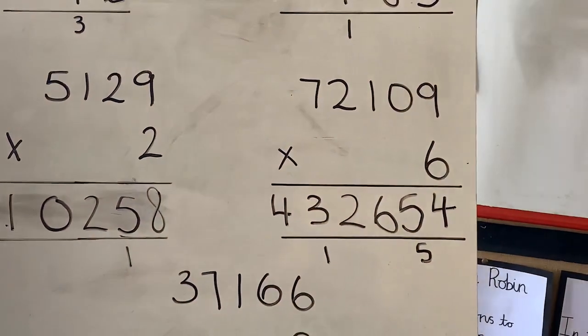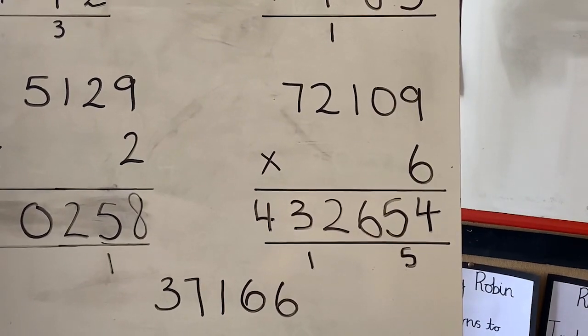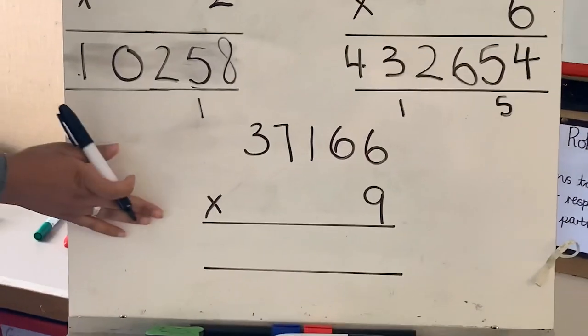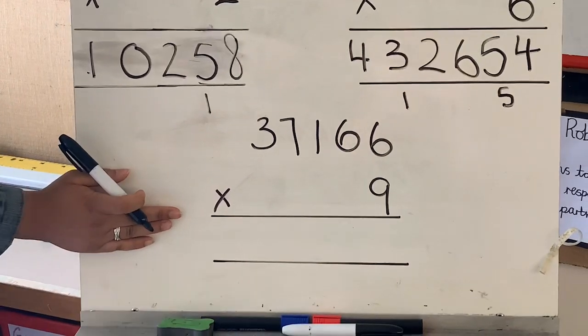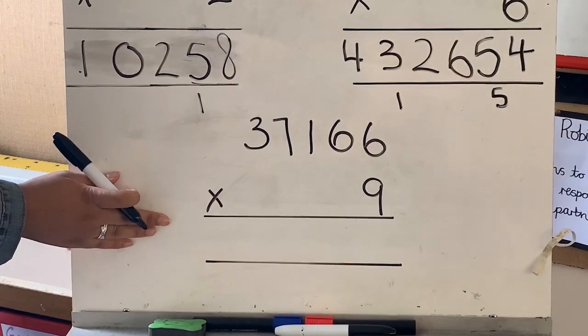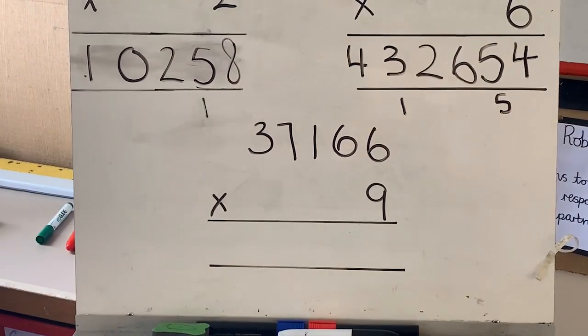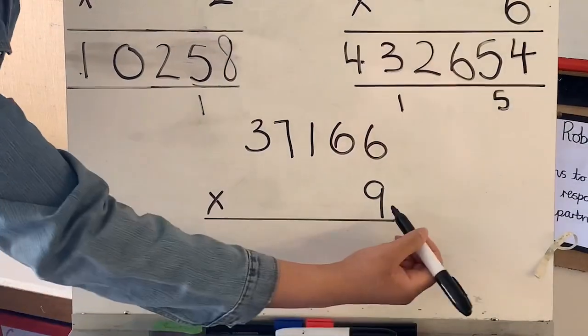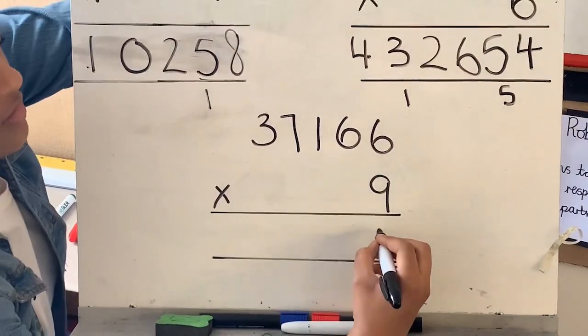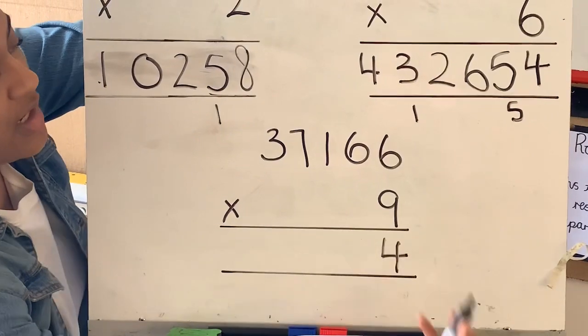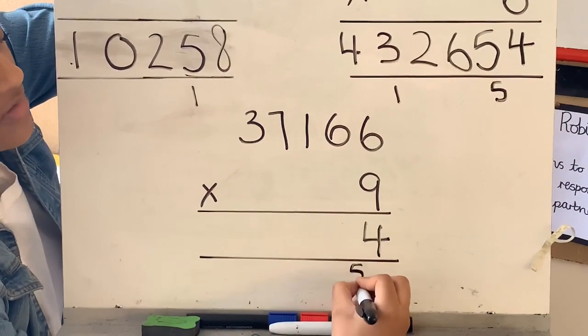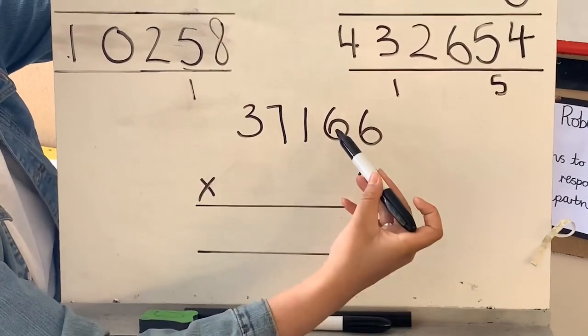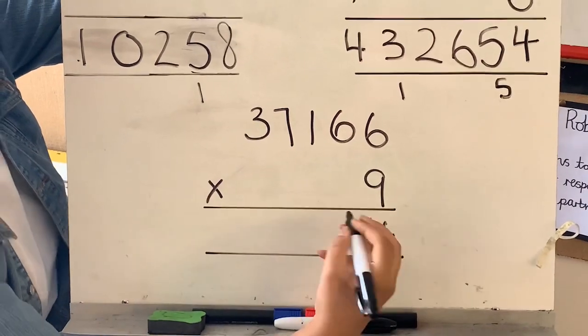Moving on to our last calculation, 37,166 times 9. Again starting off in our ones, 9 times 6 which is 54, so put the 4 down here, exchange the 5 to the next column. 9 times 6 again we know it's 54, but add the 5 which equals 59, so put the 9 down, exchange the 5 over to the next column.